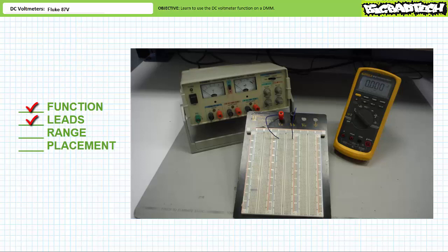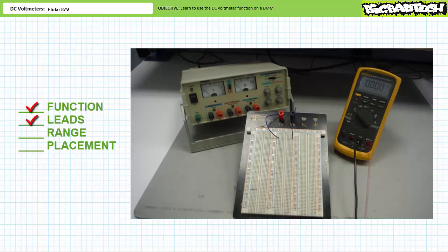Leads: before we make use of the DC voltmeter function, we need to insert the leads in the right place. Black lead into the black common hole. Red lead into the red hole indicated with a V — the shorthand for units of voltage — over it. Yes, you can put a black lead in a red hole or a red lead in a black hole, just like you can put a hat on your foot, but that is not its intended purpose.